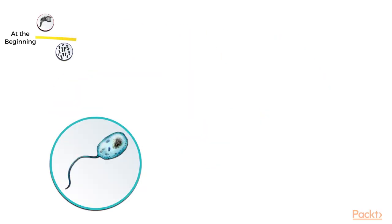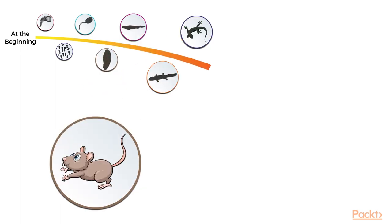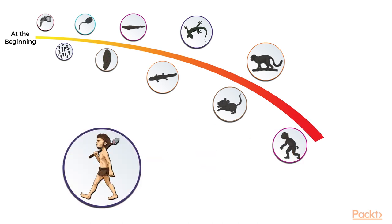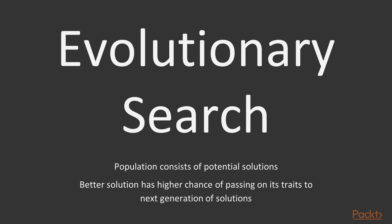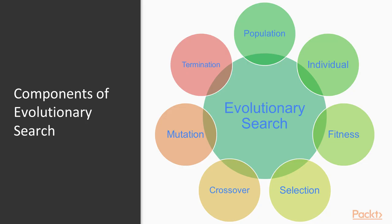Evolution is the change in characteristics of a population over generations. It favors traits suited for survival — this theory explains how apes evolved into humans. Charles Darwin wrote the phrase "survival of the fittest" in his book Origin of the Species to describe the natural selection process happening in nature. According to this theory, fitter individuals will last longer to pass on traits to the next generation. Evolutionary search is inspired from the biological process of evolution. In evolutionary search, a population consists of potential solutions, and a better solution has higher chances of passing on its traits to the next generation of solutions.